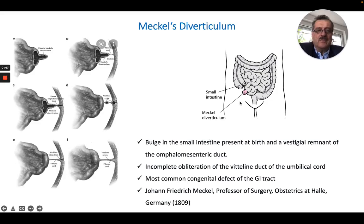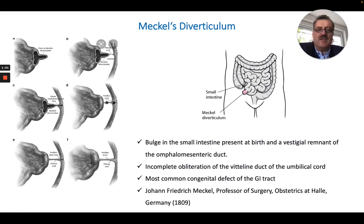Meckel's diverticulum is essentially an incomplete obliteration of the vitelline duct of the umbilical cord. It's the most common congenital defect of the gastrointestinal tract.